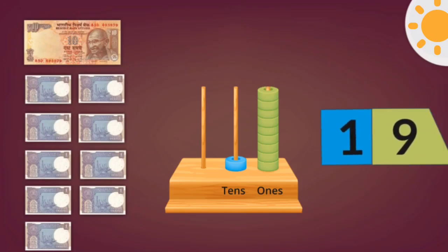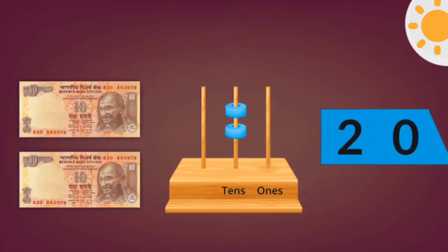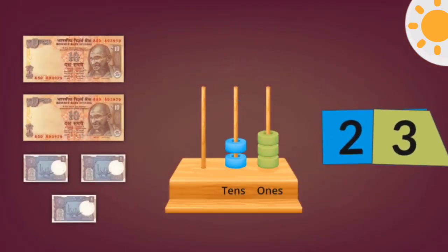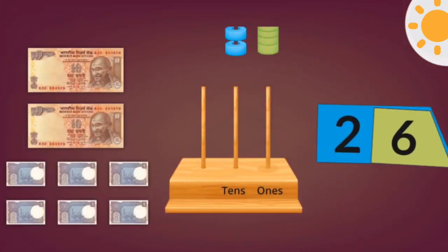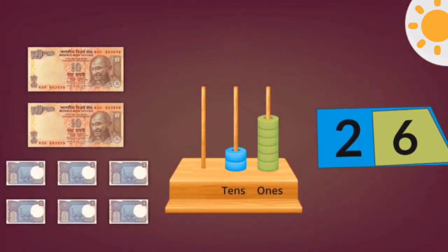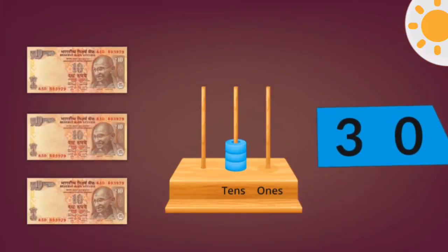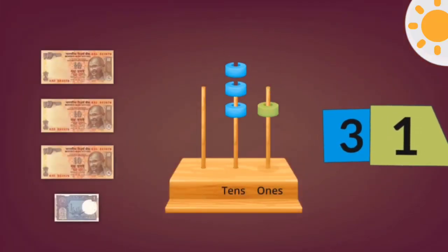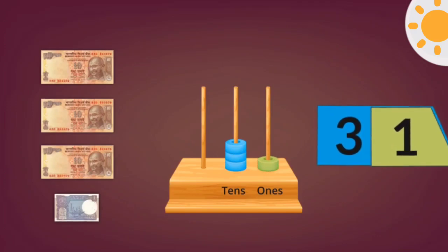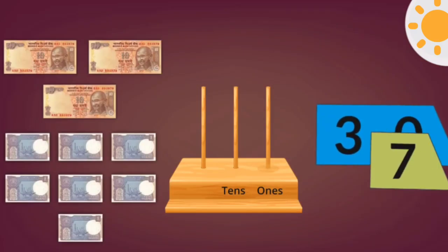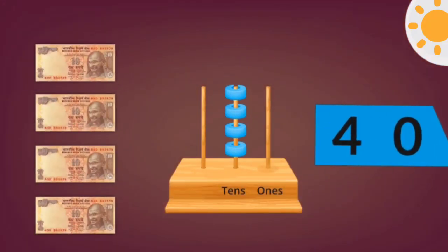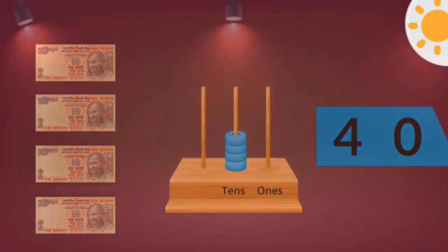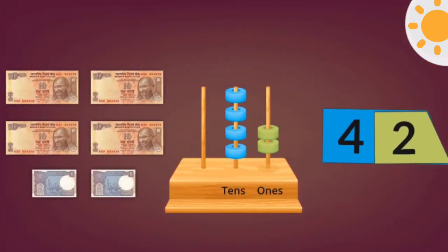And twenty, twenty. Twenty and three, twenty-three. Twenty and six, twenty-six. And thirty, thirty. Thirty and one, thirty-one. Thirty and seven, thirty-seven.